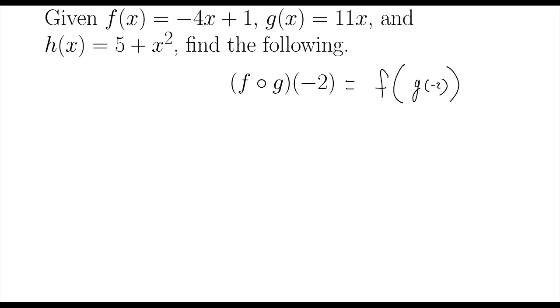Okay, so I can figure this out. I know how to find g of negative 2. So off to the side here, I'll say g of negative 2 is equal to, up here I know g of x is 11x, so 11 times negative 2, that's negative 22.